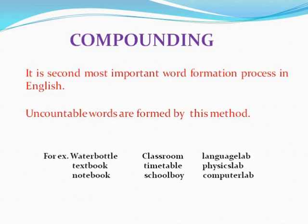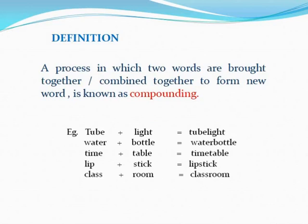This process is known as Compounding. Definition: a process in which two words are brought together or combined together to form a new word is known as Compounding. For example, Tube plus light — Tubelight. Water plus bottle — Water bottle. Similarly, Timetable, Lipstick, and Classroom.